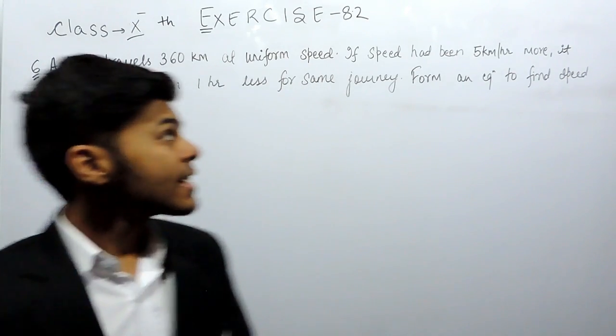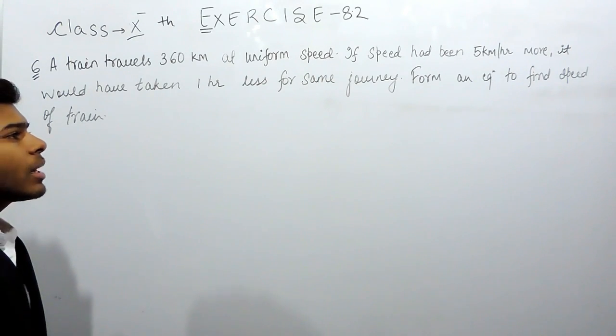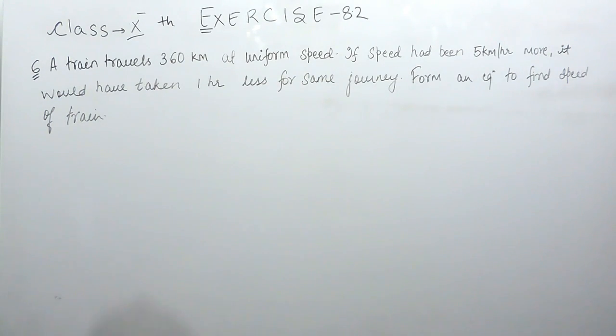Hello everyone, this is the 6th question of exercise 8.2. The question says that a train travels 360 km at a uniform speed. If the speed had been 5 km more, it would have taken 1 hour less for the same journey. We have to form an equation and calculate the speed of train.